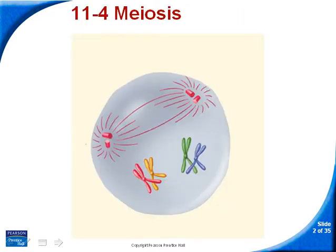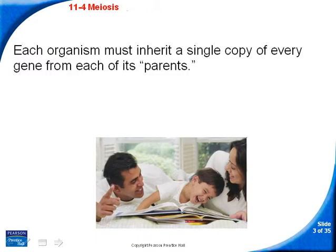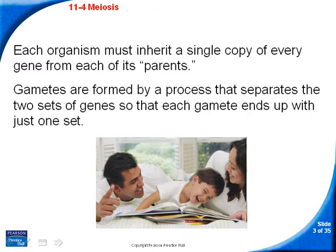This is the chapter 11 section 4 podcast on meiosis, which is very similar to mitosis. Each organism inherits a single copy of each of its genes from each of its parents — a mom and a dad — and the gametes form in a process that separates the two sets of genes so that each gamete ends up with just one set, one allele for each pair of alleles that every person has for a gene.